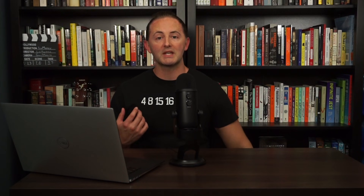According to Article 1, Section 8, Congress has certain enumerated powers — things like declaring war, raising an army, taxing, raising revenue, passing a budget, spending money, coining money, borrowing money — a whole bunch of stuff to do with money. Those are some of the enumerated or expressed powers of Congress.